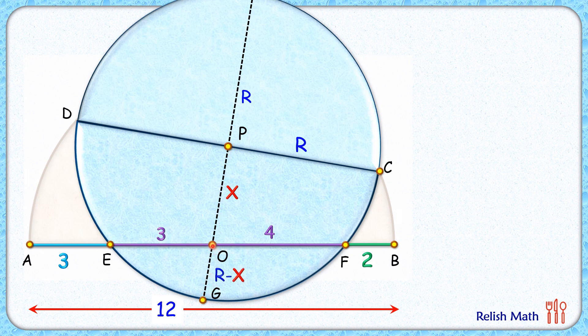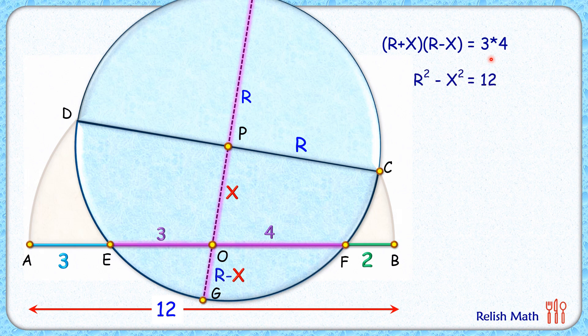Applying power of point at point O where chord EF and chord HG meet at point O. So power of point theorem gives R plus X times R minus X is 3 times 4. Opening up the bracket we get R squared minus X squared is 12. That's our first equation from blue circle.